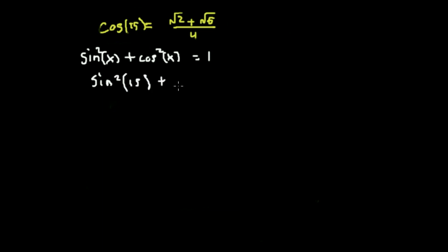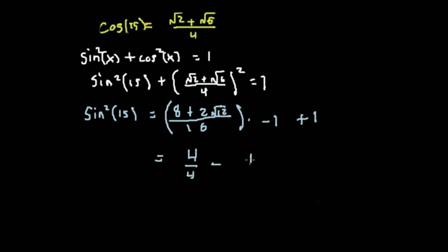Now to solve for sine, we can just say that sine squared plus cosine squared is 1. We can replace the cosine squared with what we just solved for. We can solve in terms of sine squared. This simplifies to the square root of 2 minus root 3 over 4.